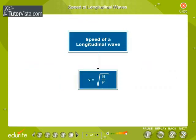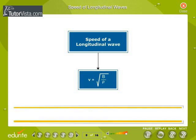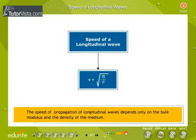Speed of longitudinal waves in a medium is given by the equation V equals root of B by rho, where B is the bulk modulus. This shows that the speed of propagation of longitudinal waves depends only on the bulk modulus and the density of the medium.